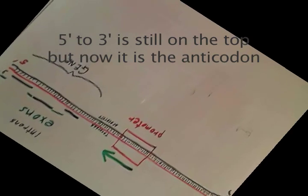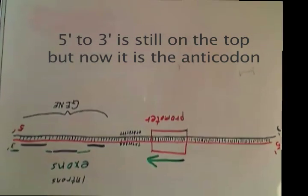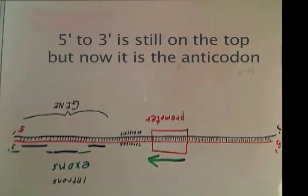The arrow can point in either direction. This tells us that the codon can be on either strand.